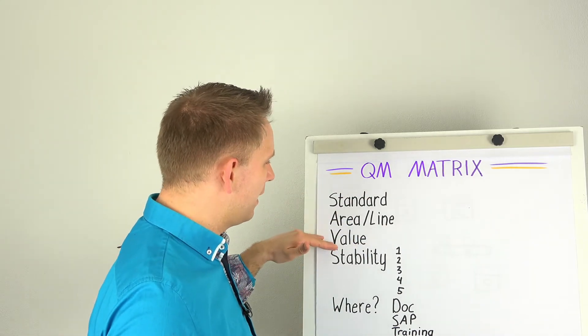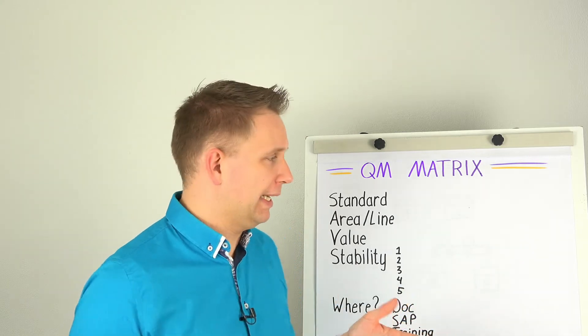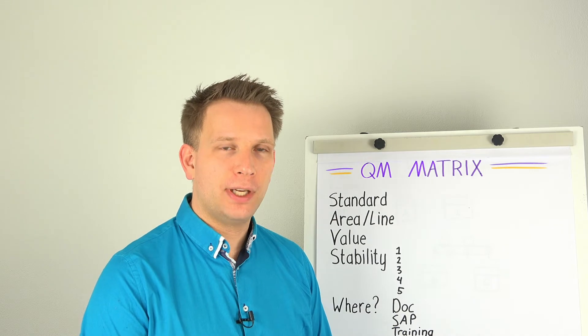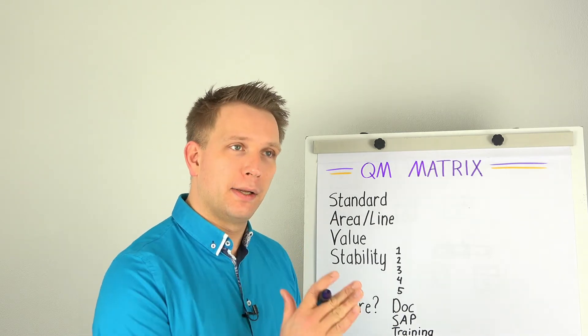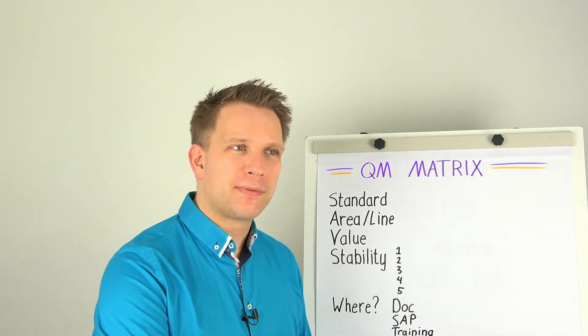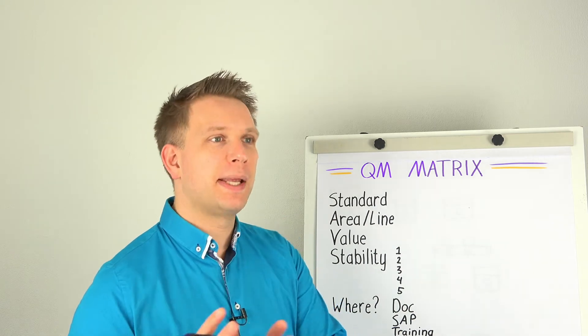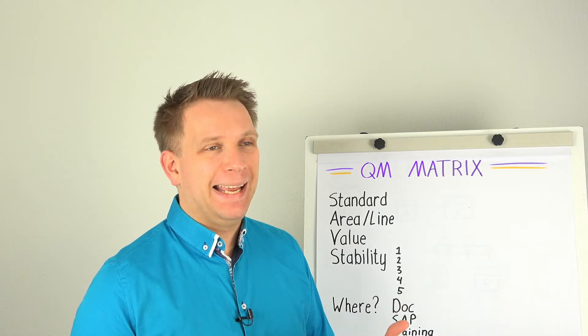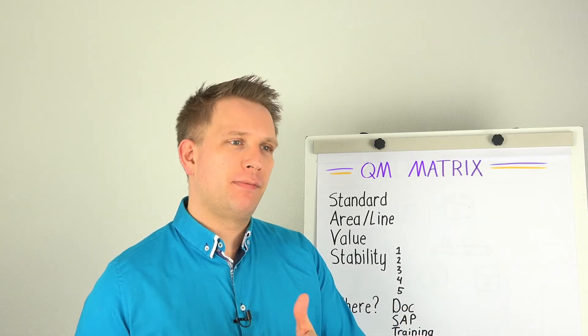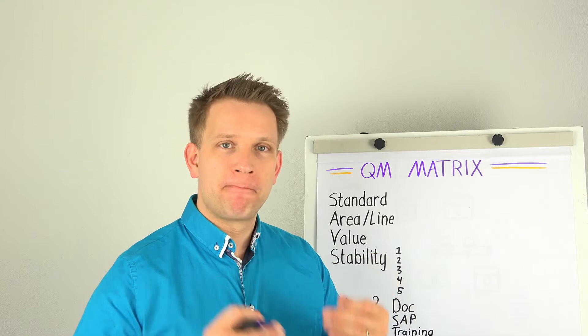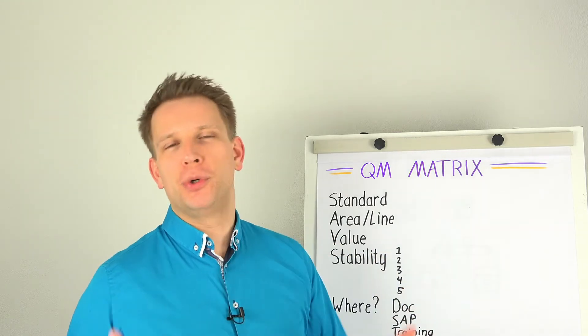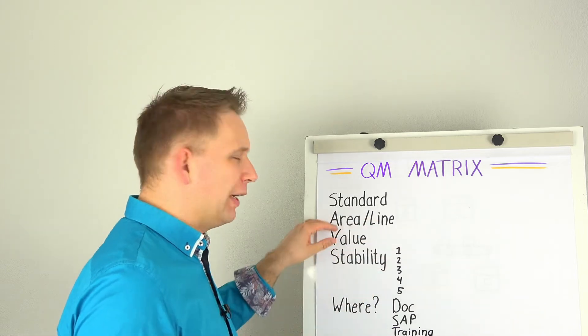What we put into the quality management matrix starts with the standard itself. For instance, the temperature of the sealing iron on my packaging machine, and that is in the area of assembly on line B.